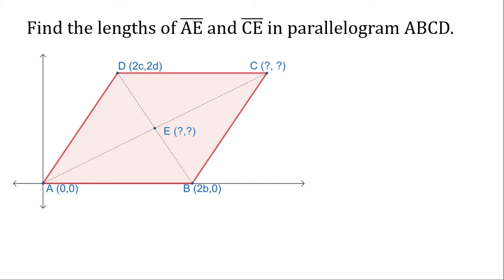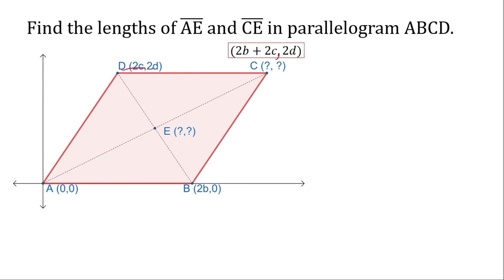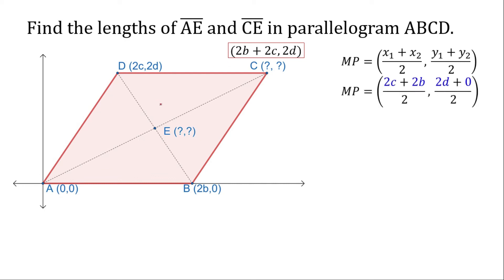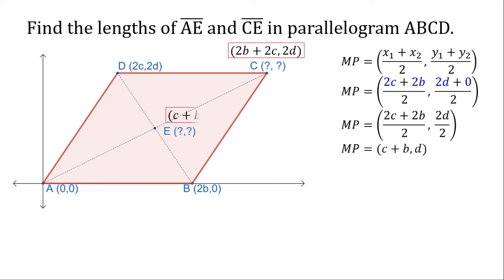Find the lengths of AE and CE in the parallelogram ABCD. To answer this, we need first to find the coordinates of E using the midpoint formula. There is a missing coordinate, which we can solve by adding 2B and 2C, giving coordinates 2B plus 2C, 2D. Using these points in the midpoint formula with coordinates 2C plus 2B and 2D plus 0, and simplifying, we get E at C plus B, D.